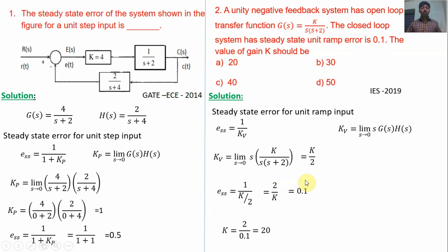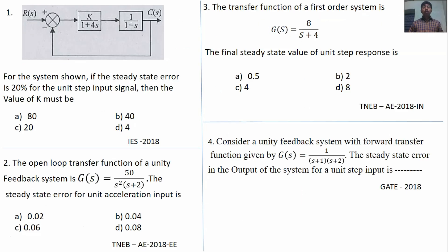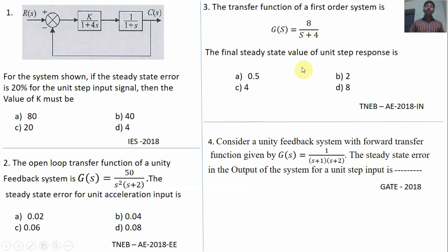Now for self-practice: the first question is from the Indian Engineering Services examination 2018. The second question is from the Tamil Nadu Electricity Board examination 2018, electrical section. The third question is from the TNEB examination 2018, instrumentation department — the objective here is to find the steady state output value, not the error. Questions one and two ask you to find the steady state error; the fourth question is from GATE 2018.